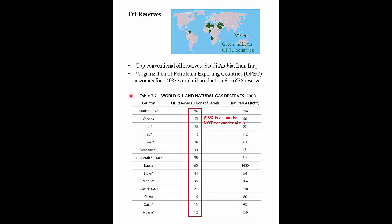Looking at table 7.2 from the textbook, the countries ranked by crude reserves are Saudi Arabia, Canada, Iran, Iraq, and Kuwait — the Middle Eastern countries dominate. Canada is high on this list because they've included tar sands. 98% of that 178 billion barrels is actually non-conventional oil, and how economic it is to produce depends upon the world price of oil. I don't think Canada should really be listed as number two, but that's just my opinion.